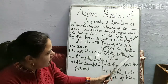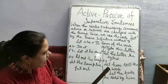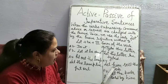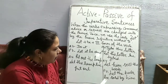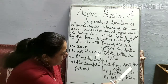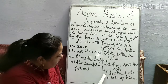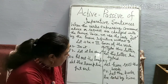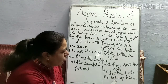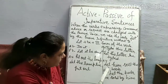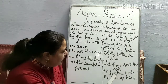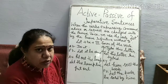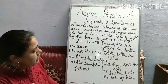Active voice: 'Let him sell the book.' The passive voice answer will be: 'Let the book be sold by him.' So the object 'the book' becomes the subject and 'by him' is added at the end.